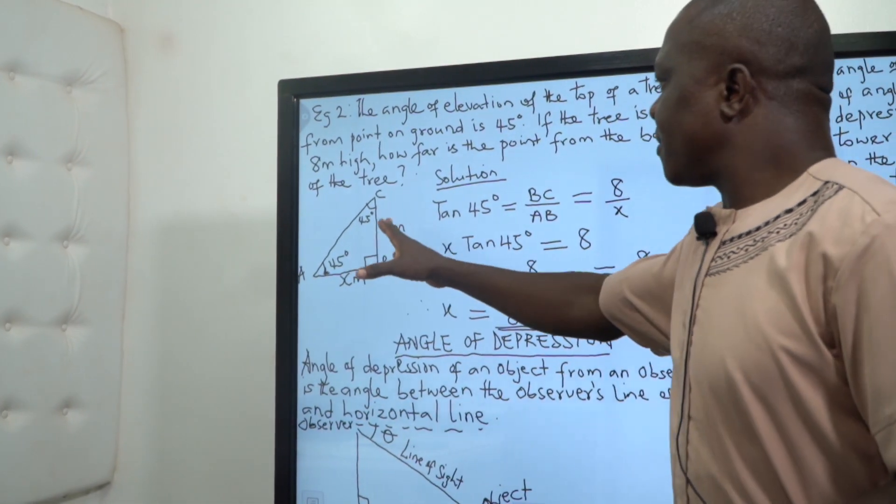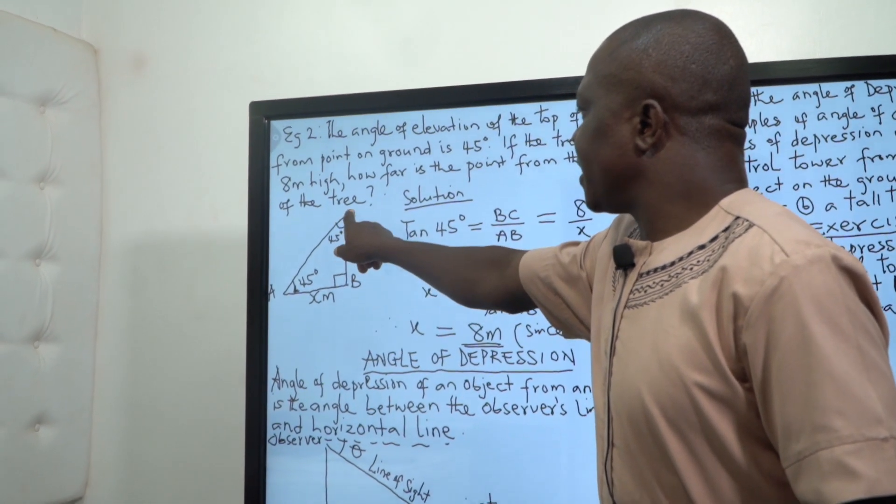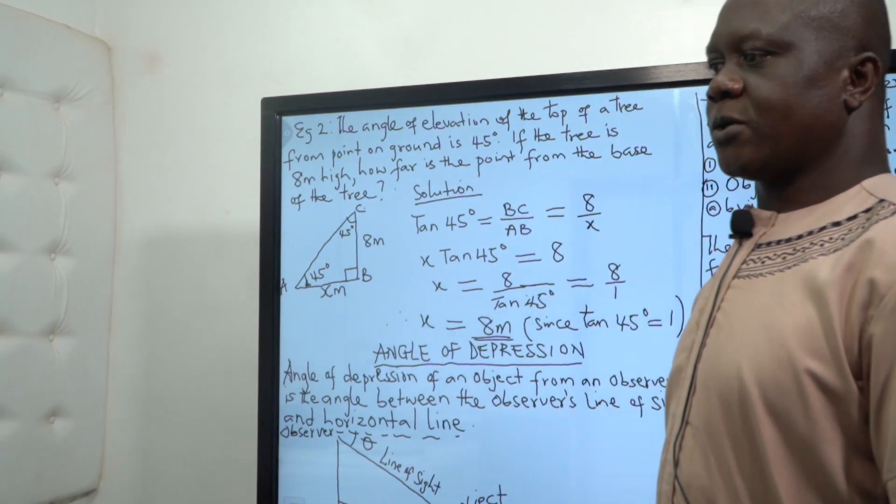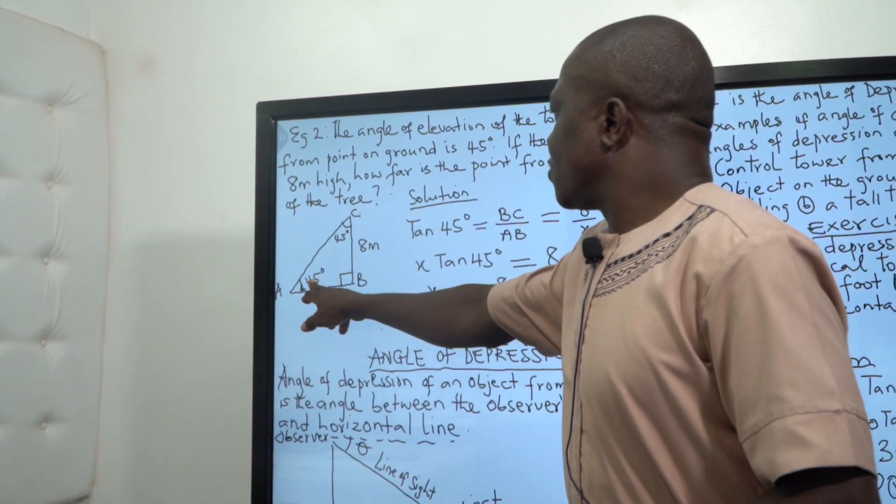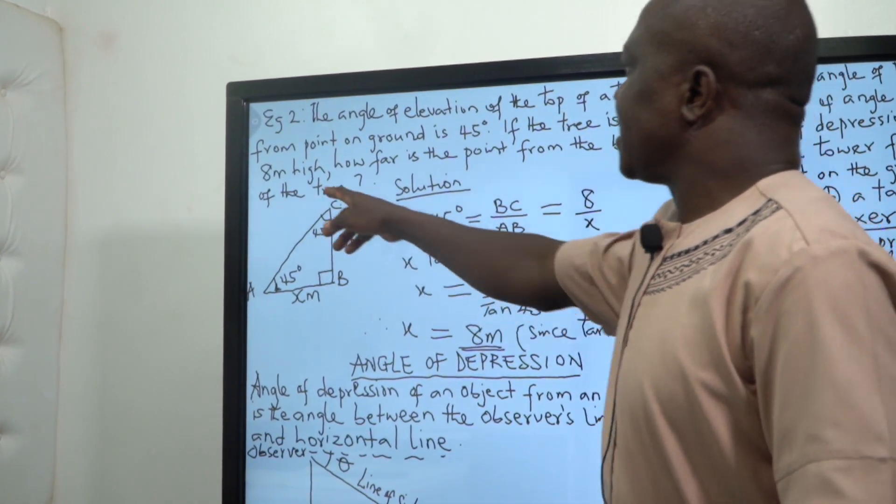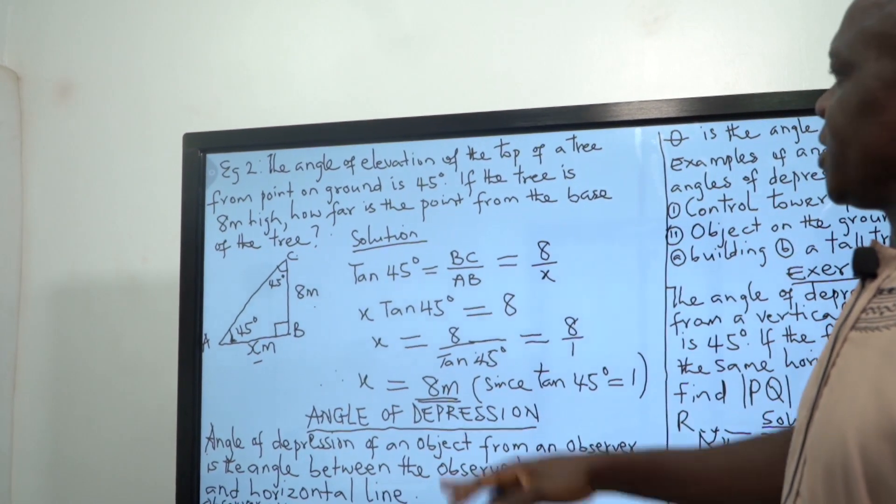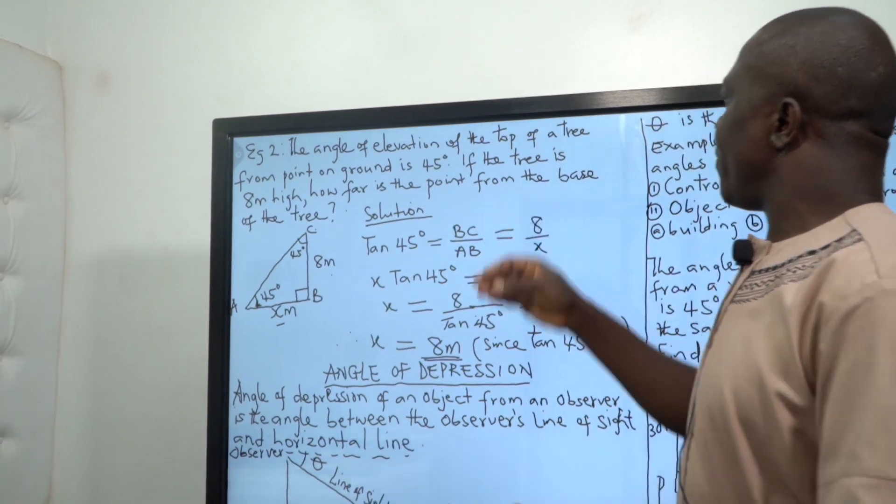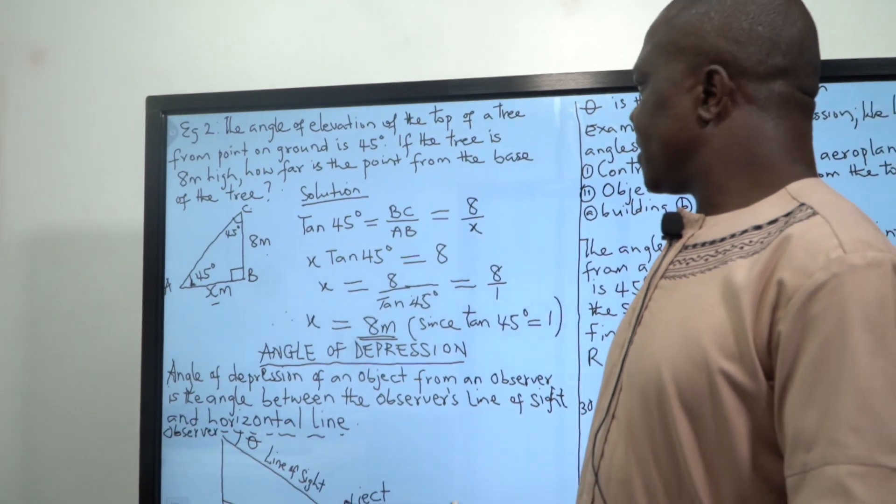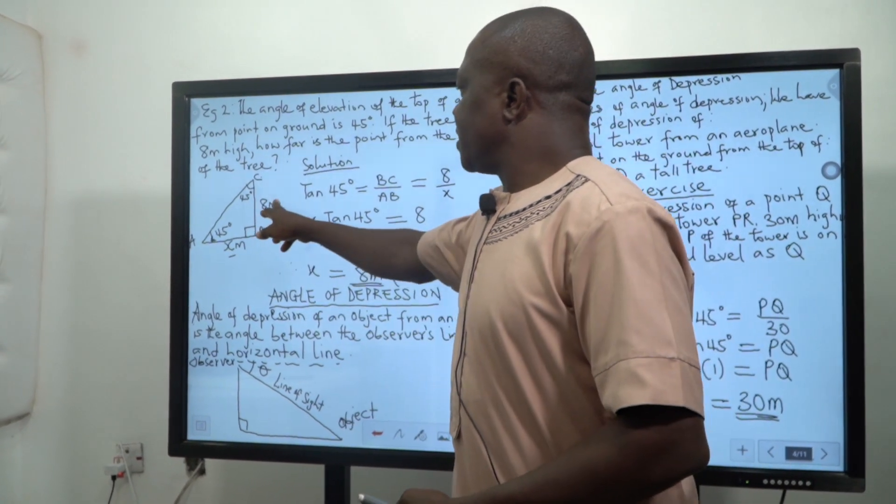You can see the diagram here. I represent this as the tree, the top of the tree. This is where the observer is standing, which could be you. We said the angle is 45 degrees. And the height, because we are told it is 8 meters high, that's why I have 8 here. The base, because the question said how far is the point from the base, which we don't know, I represent it as X.